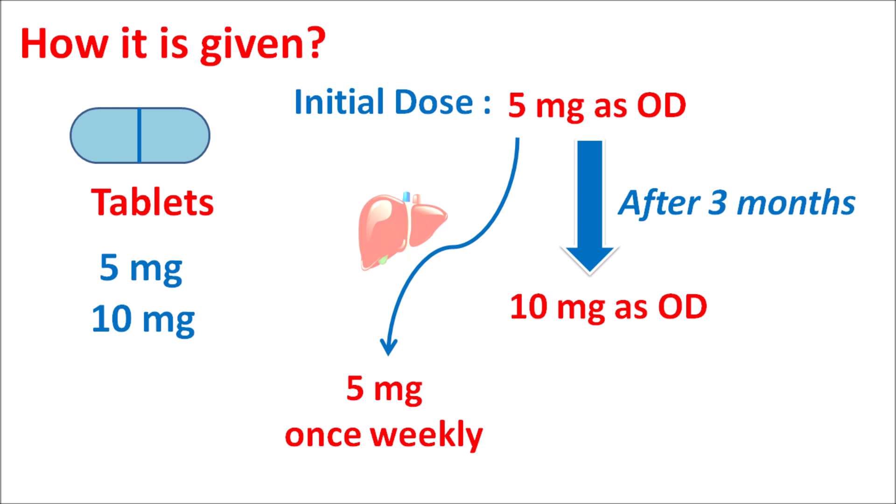In summary, obeticholic acid is a farnesoid X receptor agonist that reduces uptake of bile acids into hepatocytes, increases biliary secretion, and reduces absorption of bile acids at the terminal ileum. By all of these actions, it reduces hepatic apoptosis and biliary cirrhosis. This drug is used in patients not tolerant of UDCA and can also be combined with UDCA for effective treatment of primary biliary cholangitis. It should be used carefully in patients with any hepatic decompensation.